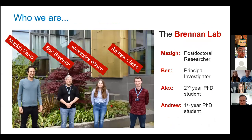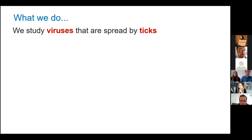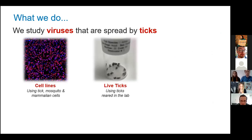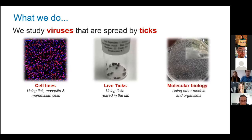To introduce who we are, this is the Brennan Lab — quite a small little research group. Mazzy is our postdoc, Ben is our PI, our principal investigator — he runs the lab and looks after all of us. I'm a second-year PhD student moving into my third year, and Andrew is in his first year of his PhD. We're really interested in viruses which are carried by and spread by ticks. We use a variety of different techniques in the lab to investigate these, such as cell lines. We've actually just established our own live tick colony, so we'll be moving into doing things in these organisms, and we complement both with a bunch of different molecular biology techniques.